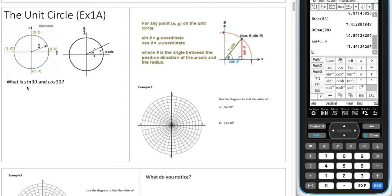So what is sine 30 and cosine 30? Well this question here can be answered using what's known as a unit circle. A unit circle, unit meaning one, radius in this case. So it's a circle of one radius.